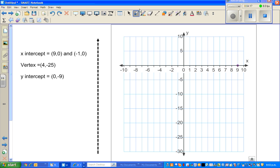This is our x-intercept, vertex, and y-intercept. Let me plot the points. The x-intercept is 9, 0. The other point is negative 1, 0. The vertex is 4, negative 25. The y-intercept is 0, negative 9, so roughly it comes here. And this is the axis of symmetry. Let me place the axis of symmetry.